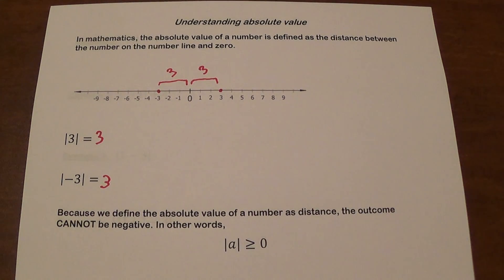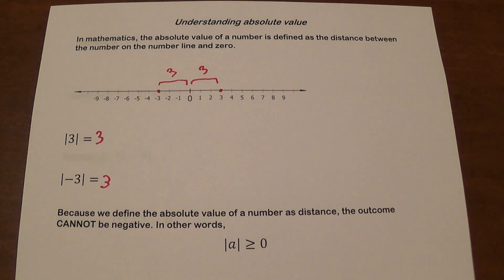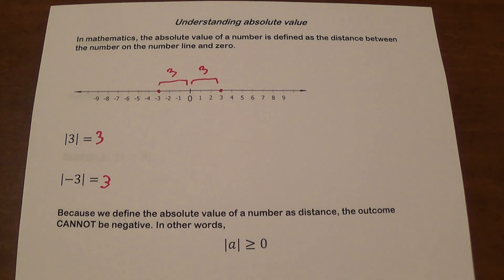A couple things I need to tell you. Since we define the absolute value as a distance, distance is something that cannot be negative. You cannot say that something is negative 5 meters away — you say it's 5 meters away. We ignore the direction. So the outcome cannot ever be negative; the absolute value of any number is going to be greater than or equal to 0.